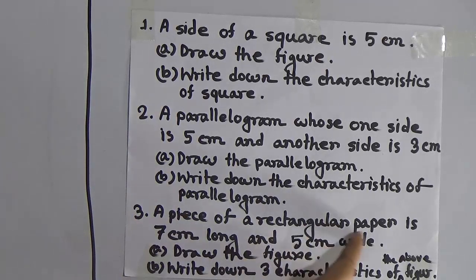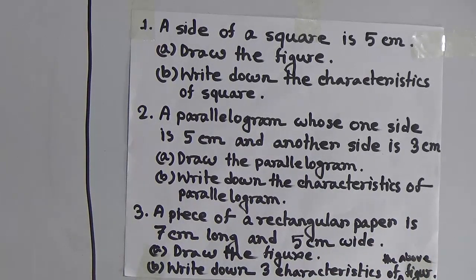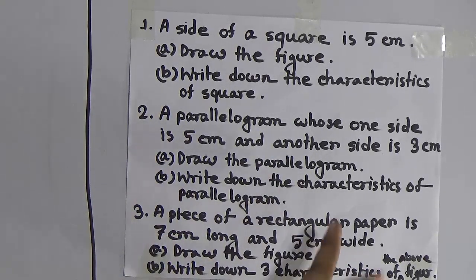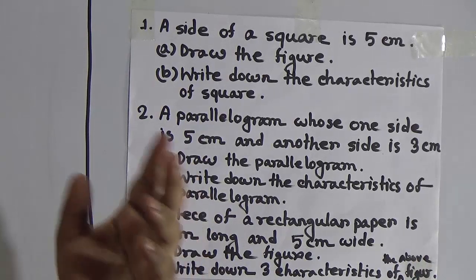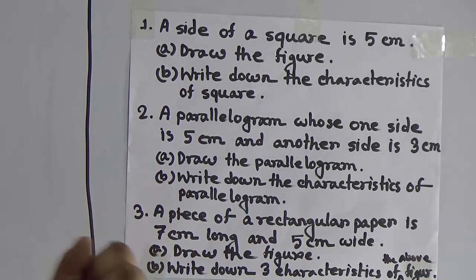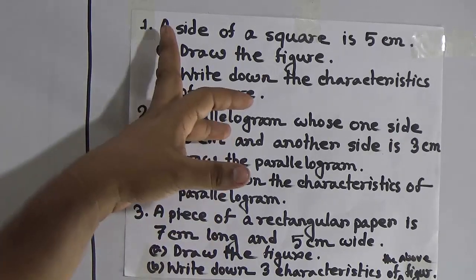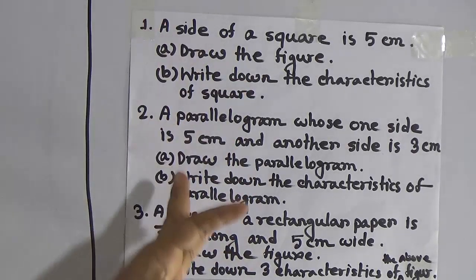Question number 3: a piece of rectangular paper is 7 centimeter long and 5 centimeter wide. That means, my dear students, a rectangular piece of paper whose length is 7 centimeter and whose width is 5 centimeter. By using this information, we need to draw the figure — we need to draw the rectangle. Part B: write down the characteristics of the above figure, meaning the rectangle drawn in part A. I hope you have understood questions 1, 2, and 3.